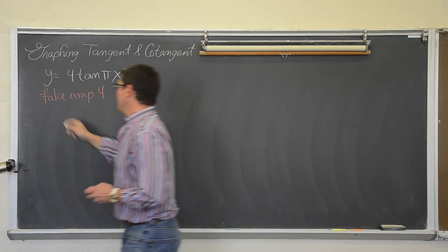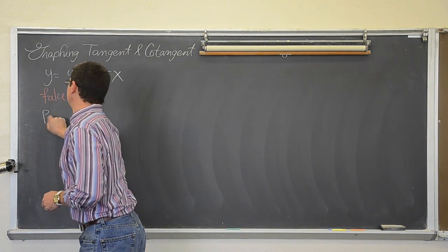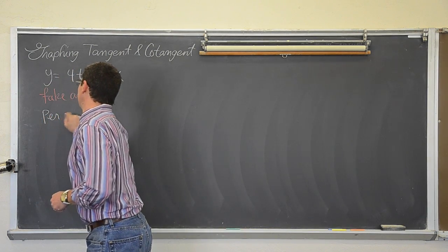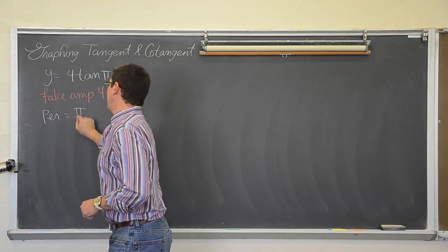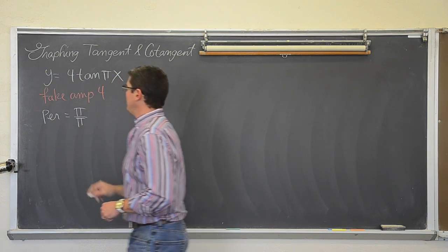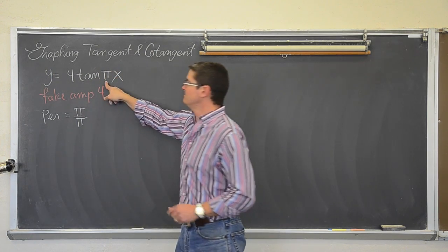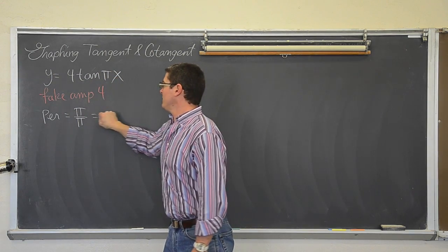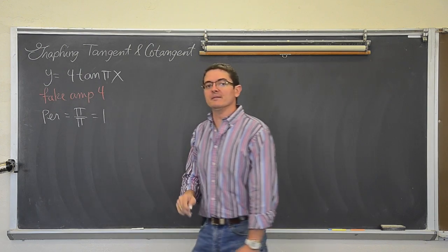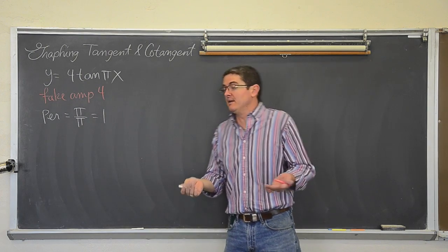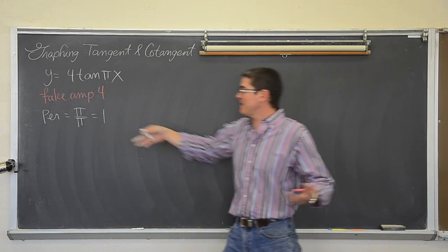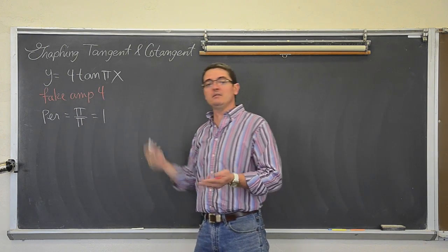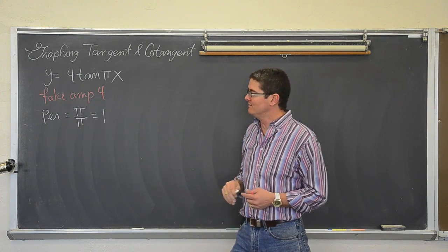The period is π divided by b. It is π over b. If the π is canceling and you just get 1, then the period is 1.